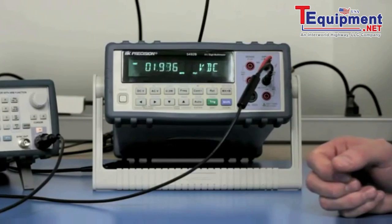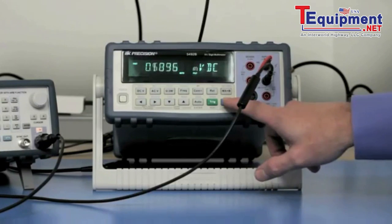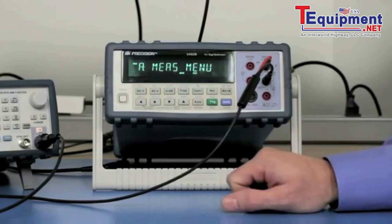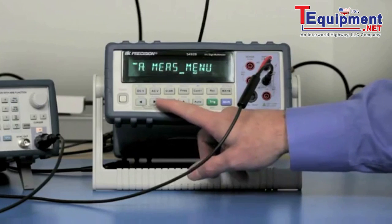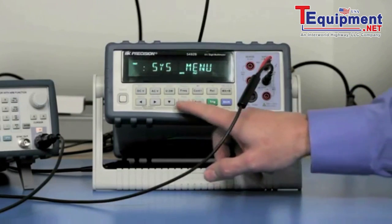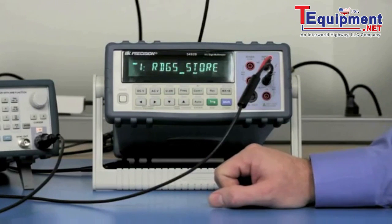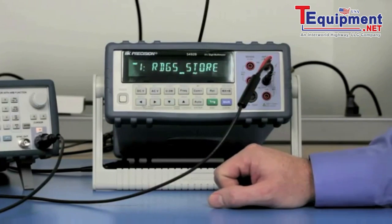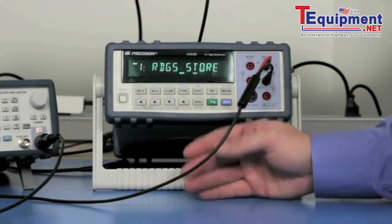To set up the 5492B to use the buffer storage operation, first we're going to press the Shift-Menu button. Then we're going to cycle through to the System menu. And this shows the readings stored. So here we're going to tell it that yes, we want to turn that on.